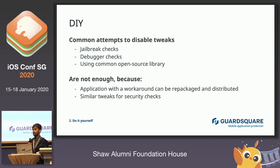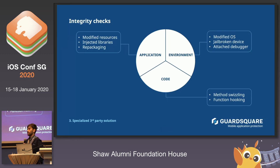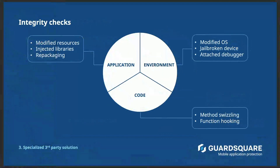There's also a third option: a third-party solution. For it to be effective, it actually has to address three integrity aspects of your application. First, environment integrity — that's where developers most often focus with their DIY solutions. Second, application integrity, which verifies the application package hasn't been modified and that no additional libraries have been injected. Third, code integrity, with a similar goal but at the code level, to make sure the code being executed is actually your code. Having all three aspects increases the effectiveness of all of them — focusing on just one won't be enough.